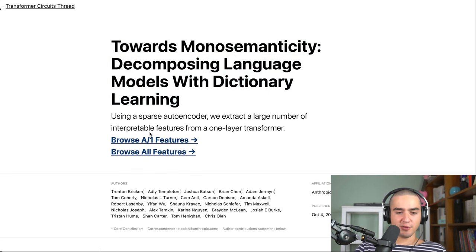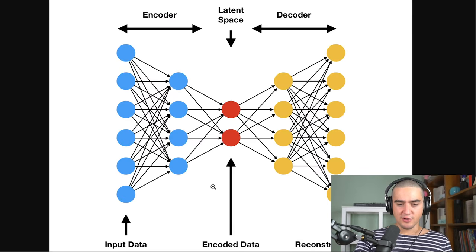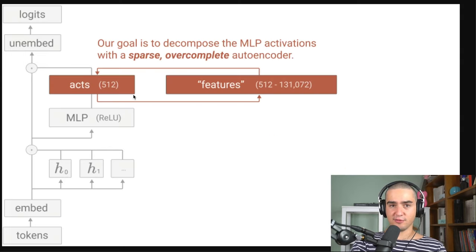There's a lot of visualization. I highly recommend to look at it towards monosemanticity, decomposing language models with dictionary learning. So the way they do it is they use a sparse autoencoder and they extract a large number of interpretable features from a one-layer transformer. So if you've never seen an autoencoder, it looks something like this. You have the encoder phase and then the decoding phase.